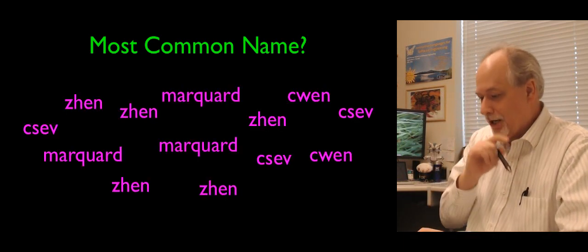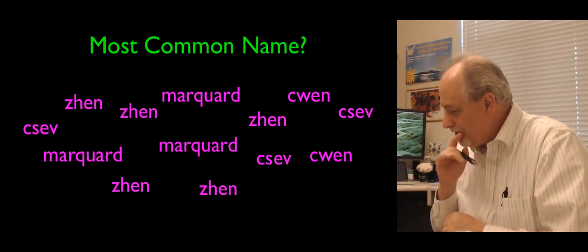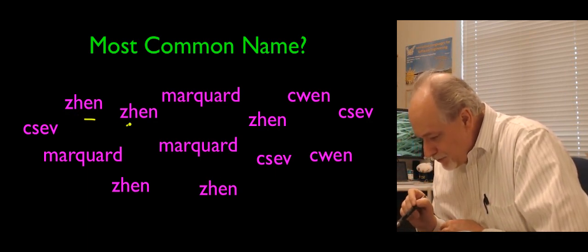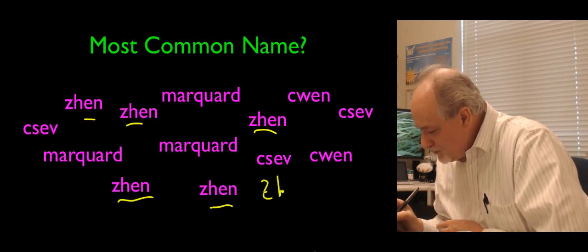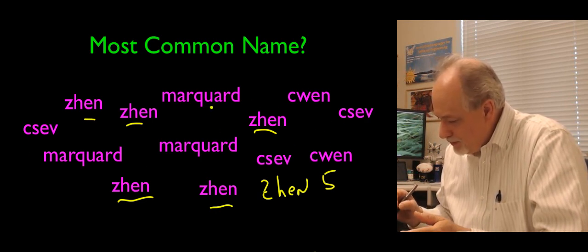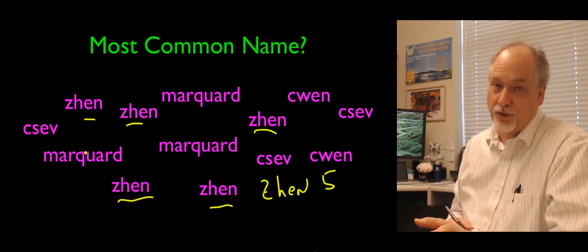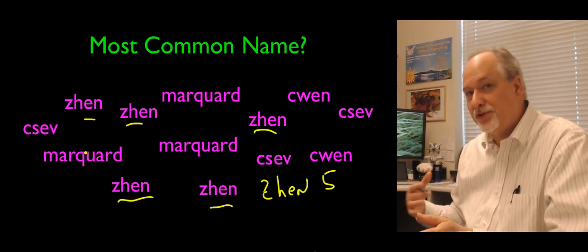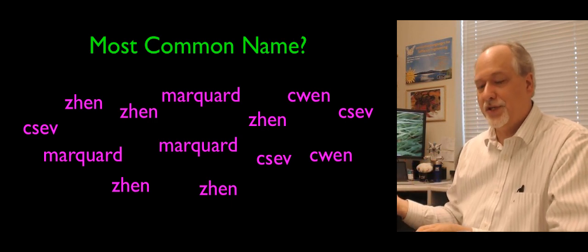Here is the whole list. Now that we see all of them, we use our human mind to scan around. I think the most common person is Zhen — I think we see Zhen five times. Csev appears three times, Chen Wen two times, and Steven Marquardt three times. The question is: what is an effective data structure if you're going to see a million of these? You can't keep it in your head — you have to come up with some kind of variable, just like 'largest so far' was a variable.